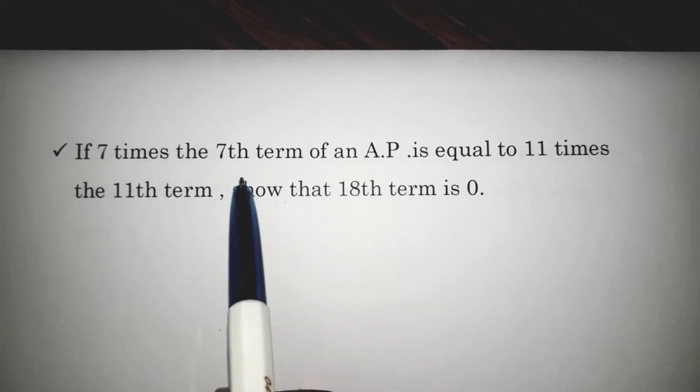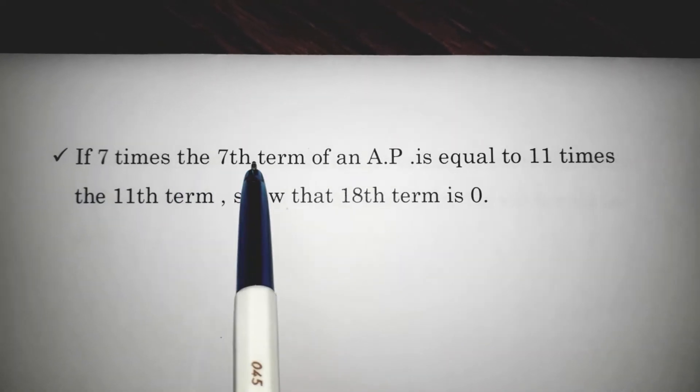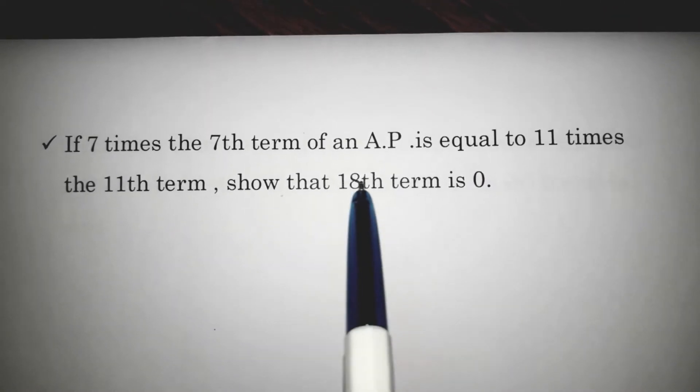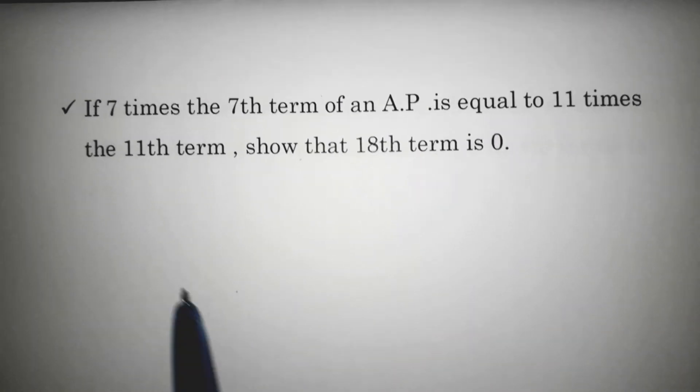Important problem from progressions. If 7 times the 7th term of an AP is equal to 11 times the 11th term, show that the 18th term is 0.